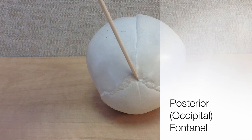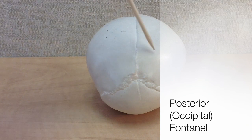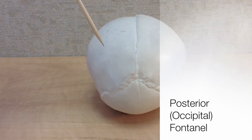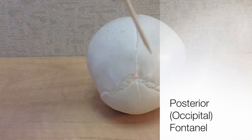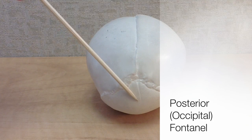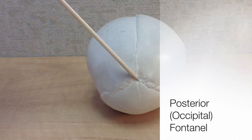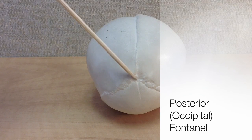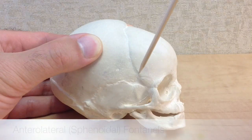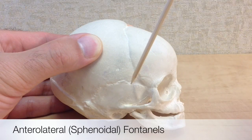The posterior or occipital fontanelle is located in the back of the skull. It's a single fontanelle found where the two parietal bones meet the single occipital bone. It's smaller than the anterior fontanelle and usually closes within two months after birth.